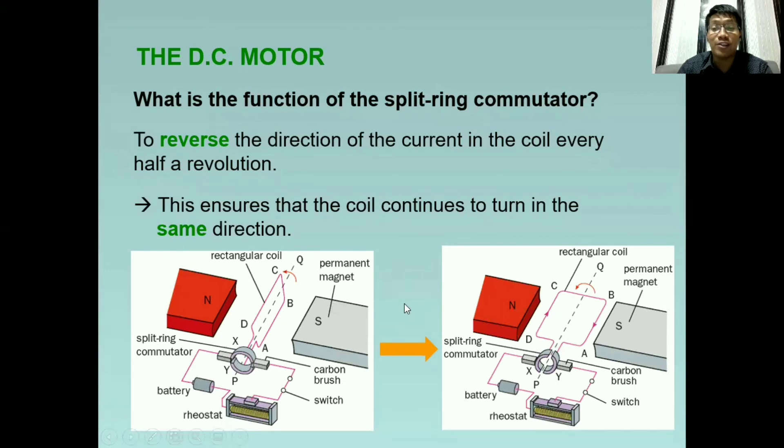Ano naman ang function ni carbon brushes? Ito ay directly connected to the commutator. And it is constantly rubbing onto it. And it is directly connected to the battery. So inaassure ni carbon brushes that the current can pass through the coil.